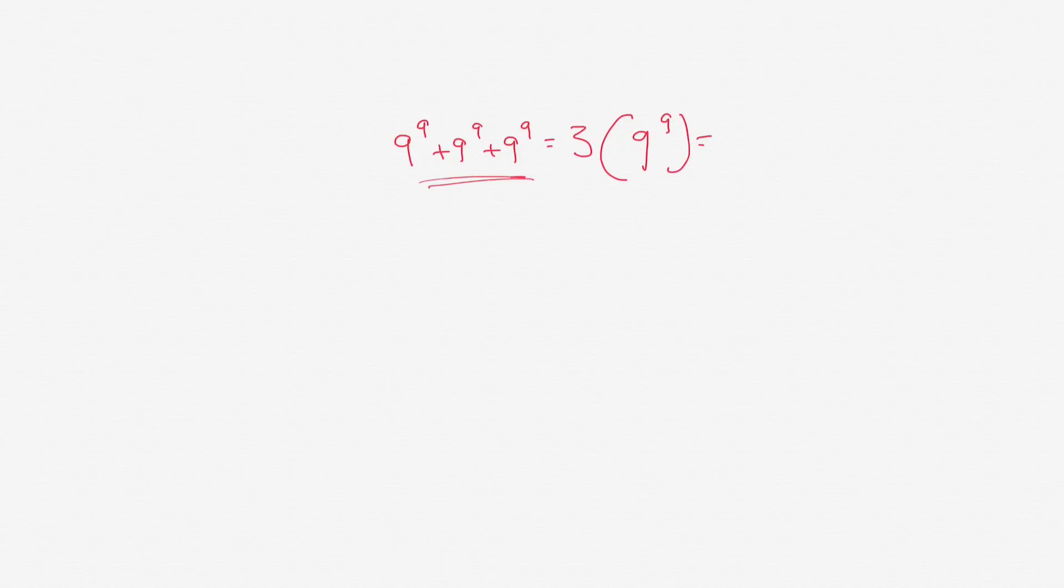If you look at this equation here let me just show you the technical reason. If you factor out 9 to the 9th then you have 1 plus 1 plus 1. Okay so that's just like 9 to the 9th times 3. Right? That's the technical reason.